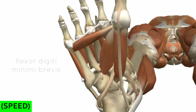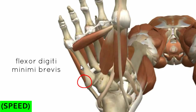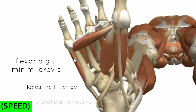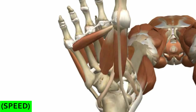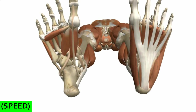Finally, we've got the flexor digiti minimi brevis - the small flexor of the smallest toe. It originates on the base of the fifth metatarsal and inserts laterally on the base of the proximal phalanx of the little toe, flexing the little toe. This is innervated by the lateral plantar nerve. It also has an origin on the fibularis longus tendon, which runs in a groove on the cuboid bone. So those are the three muscles of the third layer of the plantar group.